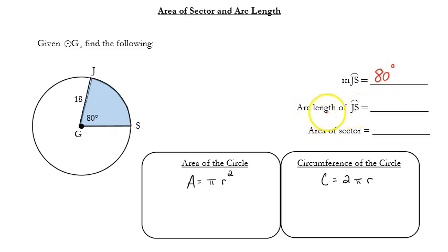When I want the length of arc JS, the length of arc JS is not measured in degrees. And then the area of the sector, which is this shaded area here.